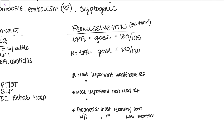Some quick board facts: they like to ask about risk factors for stroke. The most important modifiable risk factor — something you can actually do something about — is hypertension. Smoking will definitely appear as an answer choice, and while smoking does significantly increase risk, high blood pressure has been shown to be the most important modifiable factor. A non-modifiable risk factor would be age: as you get older, there's nothing you can do — your risk of having a stroke is simply higher.